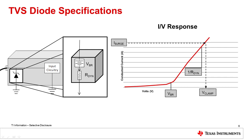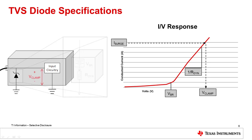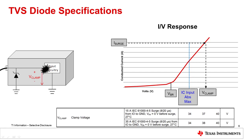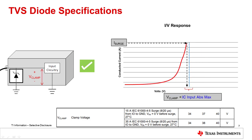V-clamp depends on the current through the TVS, so it will always be defined relative to a surge current. V-clamp is the voltage that will be seen by the system during a surge pulse. So even if the diode breaks down well below system tolerance requirements, if the V-clamp is above your IC input absolute maximum, the input of the system can see failures. TVS diode datasheets have a V-clamp specification, again in reference to a specific waveform and pulse current. The best practice is to make sure that V-clamp is less than the absolute maximum voltage tolerance of your input circuitry.